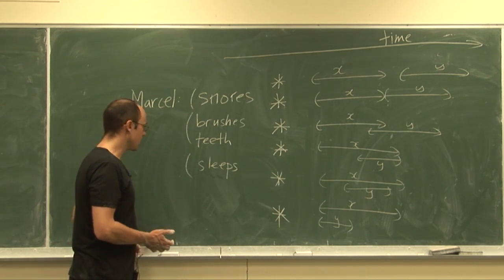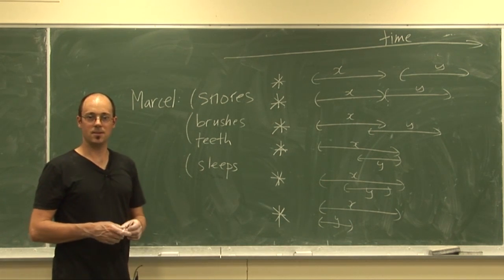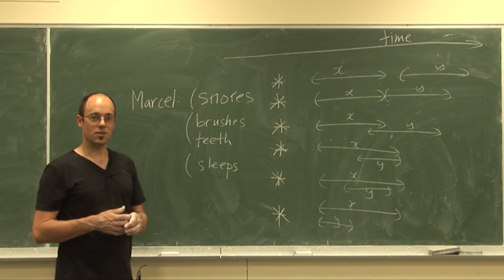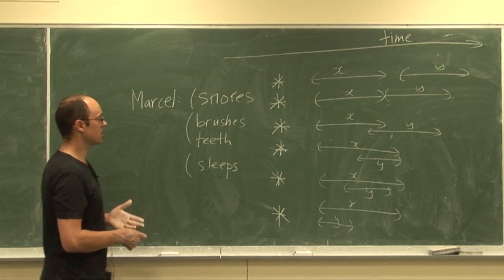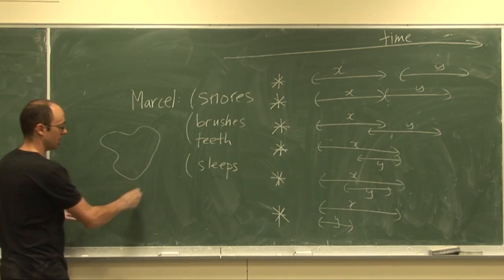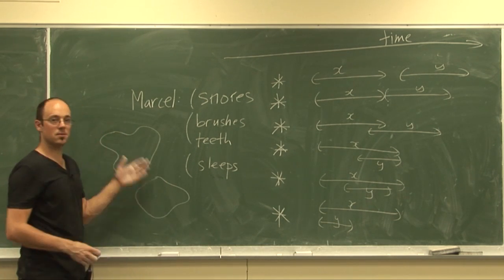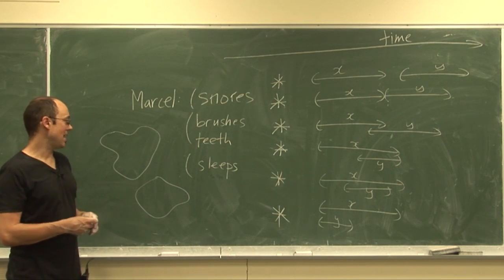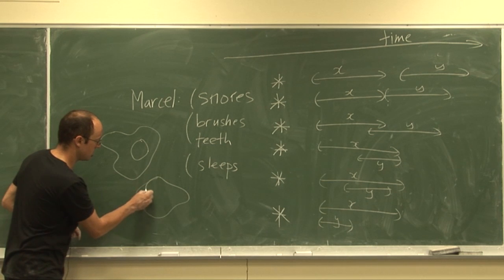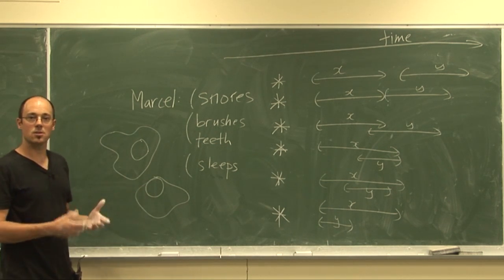There is another model here that's used for qualitative reasoning about spatial concepts. This is called RCC8 so region connection calculus. And here instead of intervals in time we deal with blobs in the plane and again we have possible relationships. So here are two blobs that don't overlap at all. Here is another possibility. A third one might be that we're inside but touch and so on.